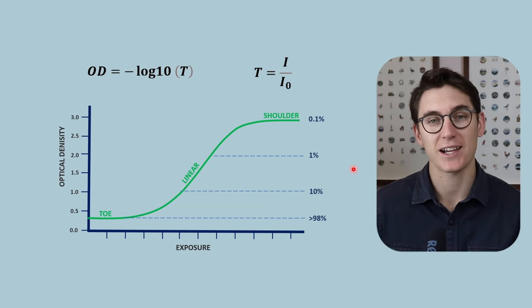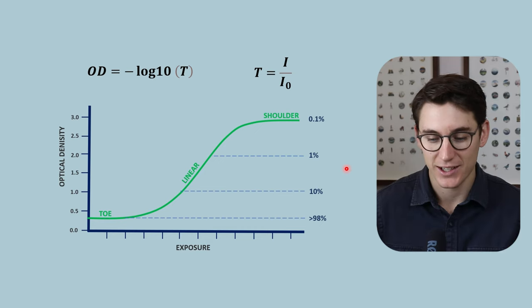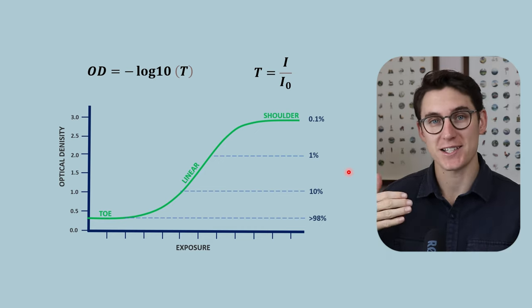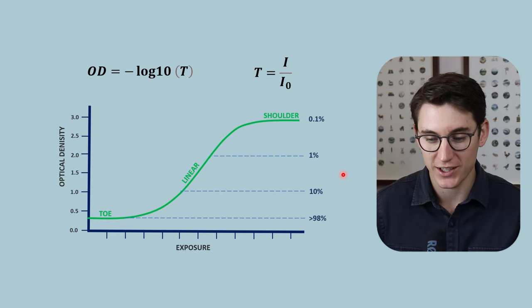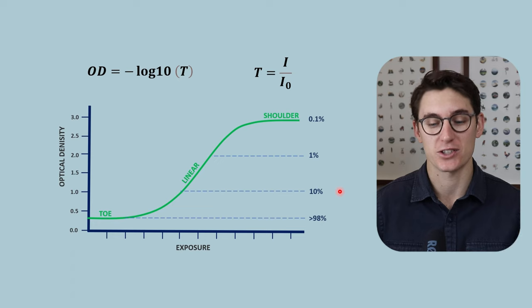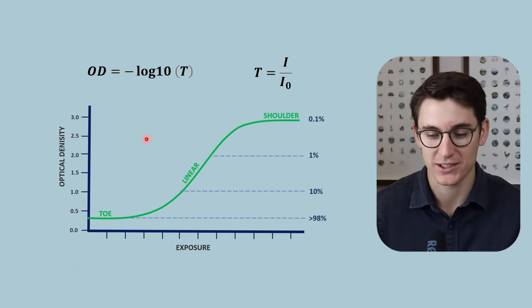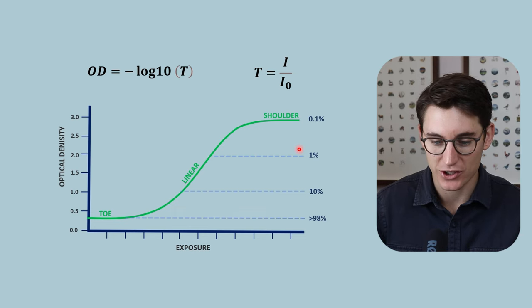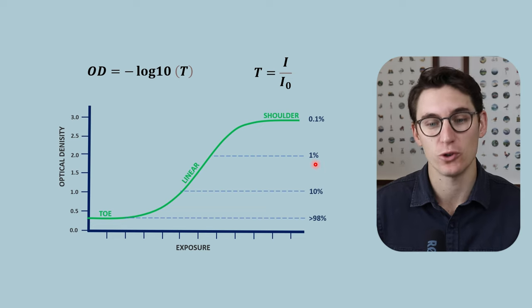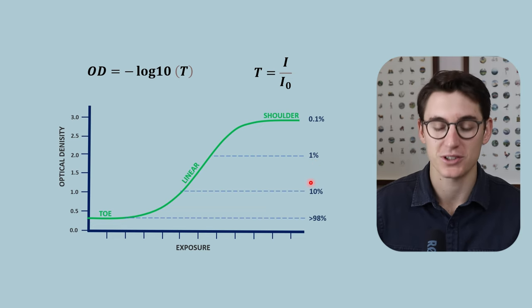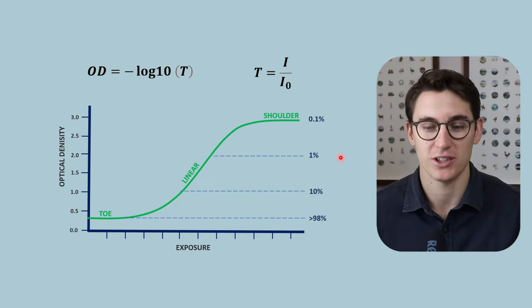Now this tenfold decrease luckily corresponds to how our eyes perceive light. Now a tenfold increase in light to us is perceived as a doubling of that light. So each one of these is a twofold difference to us. So optical density itself is a great proxy for how we perceive light. We will see this region as half as bright as this region. Anything that has an optical density of two will seem half as bright as an optical density of one. So it's a good kind of measure in your mind to see what these values mean on these graphs.